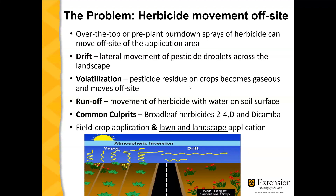Runoff can happen where the herbicide moves across the soil surface with water from rainfall. Some of the common culprits are broadleaf herbicides 2,4-D and dicamba. This can happen from field crop application as well as from lawn and landscape application.